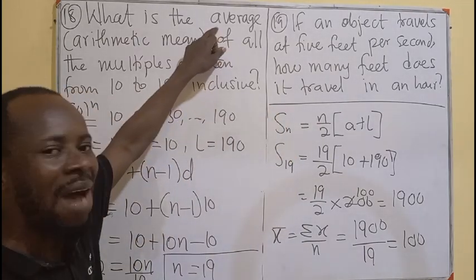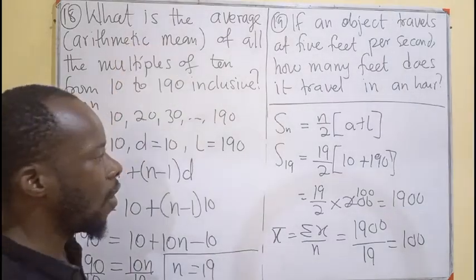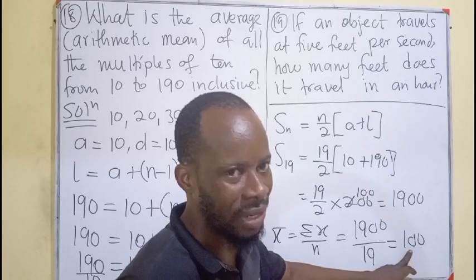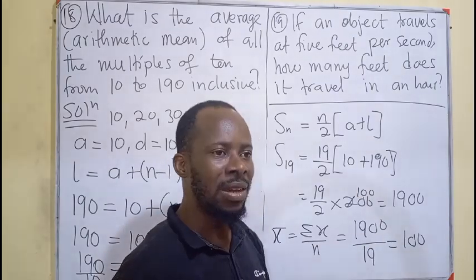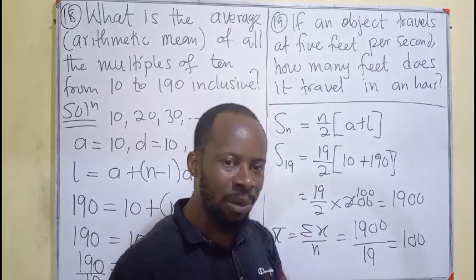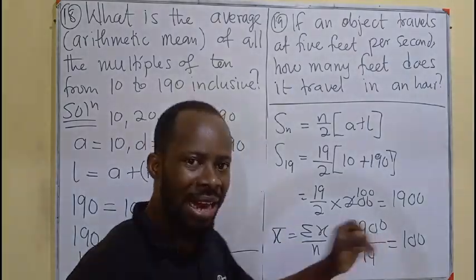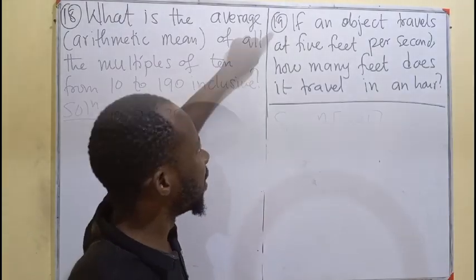Meaning, the mean or the average, the arithmetic mean of all the 19 numbers is going to be 100. I believe we can try it: 10 plus 10 plus 20 plus 30 plus 40 plus 50 up to 190, divided by 19, you will still get 100.